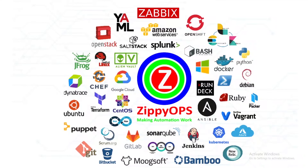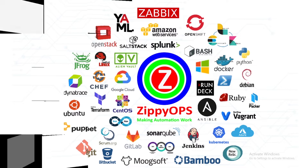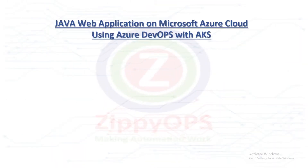Hi all, welcome to Java application deployment on Azure Kubernetes Service Cluster on the Azure Cloud, using Azure DevOps. In this video, we are going to demonstrate the deployment of Java applications onto AKS cluster on the Azure Cloud, using Azure DevOps.